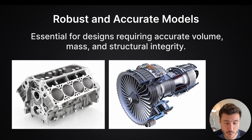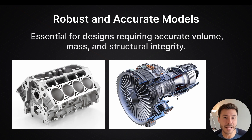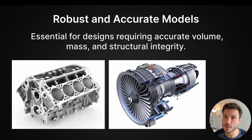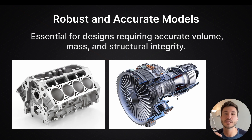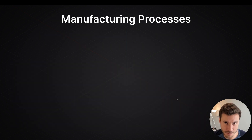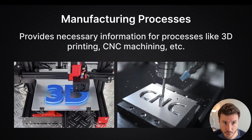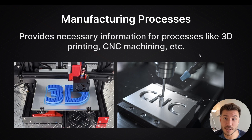Another prime example is an aerospace engine — everything has to be super precise and must be manufactured. We need accurate volumes and all that. Solid modeling is needed for the manufacturing process because it provides necessary information for processes like 3D printing, CNC machining, and so on.